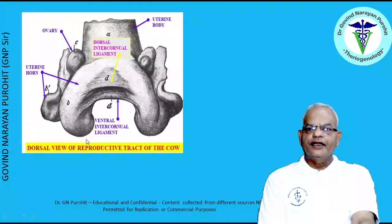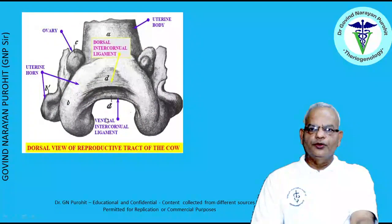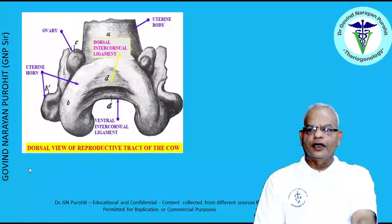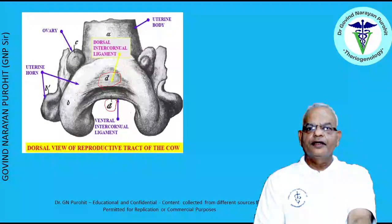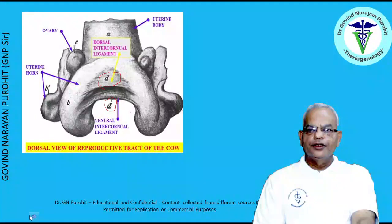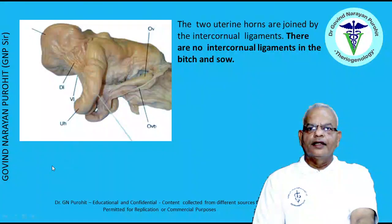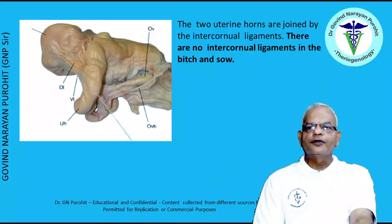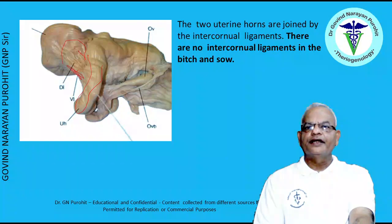The uterine horns are attached by two intercornual ligaments: the dorsal intercornual ligament and the ventral intercornual ligament. These intercornual ligaments hold the uterus. In this picture also you can see the dorsal and ventral intercornual ligaments, with one uterine horn here and another there, held by the intercornual ligament.